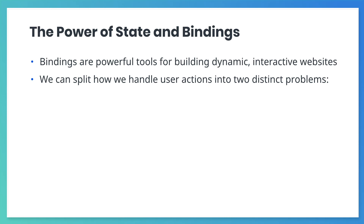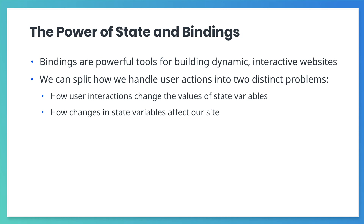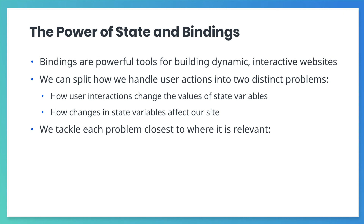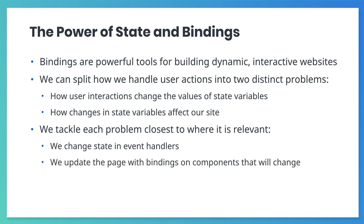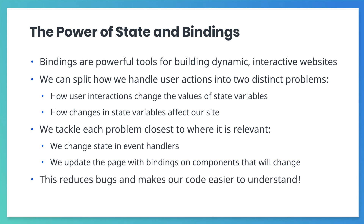Bindings allow us to split the way we handle user interaction into two distinct problems: first, how user interactions affect state variables, and second, how changes to state variables affect the content or the look of our site. We're able to tackle each problem closest to where it's most relevant. We use the setState action in component event handlers to control the effect of user interaction on our state variables. And we bind expressions containing the state variables to the properties of the components that will be changing. This two-part approach to managing user interaction can reduce errors, make it easier to change your components in the future, and help others understand your code.